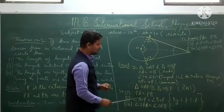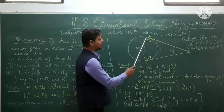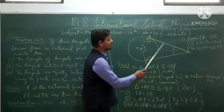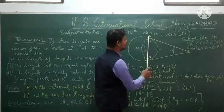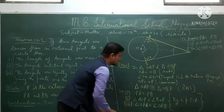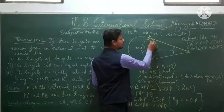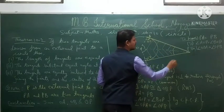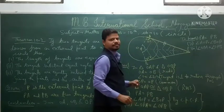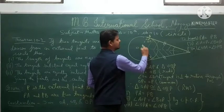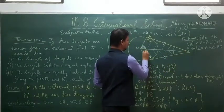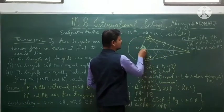Since the triangles are congruent, corresponding parts of congruent triangles are equal (CPCT). Therefore: PA equals PB — that is the first result. Second, angle AOP equals angle BOP by CPCT. And third, angle OPA equals angle OPB by CPCT — meaning these two angles are also equal.